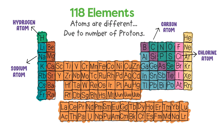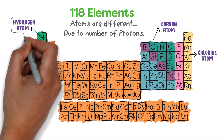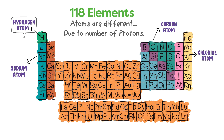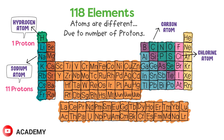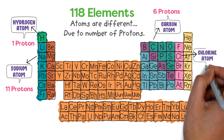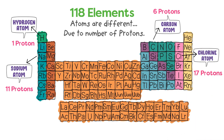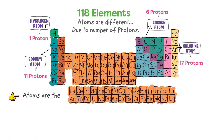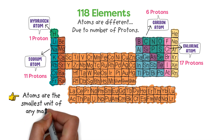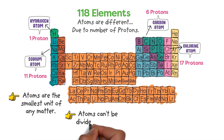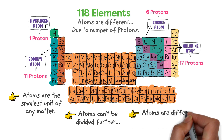Remember that atoms are different from one another due to the number of protons. For example, in a hydrogen atom there is only one proton; in a sodium atom there are 11 protons; in a carbon atom there are 6 protons; and in a chlorine atom there are 17 protons. Thus remember these three important points: atoms are the smallest unit of any matter; atoms cannot be divided further; and atoms are different from one another due to number of protons.